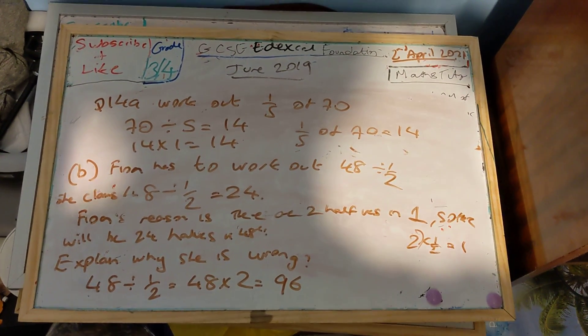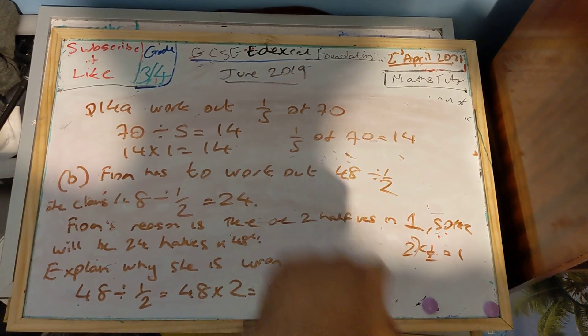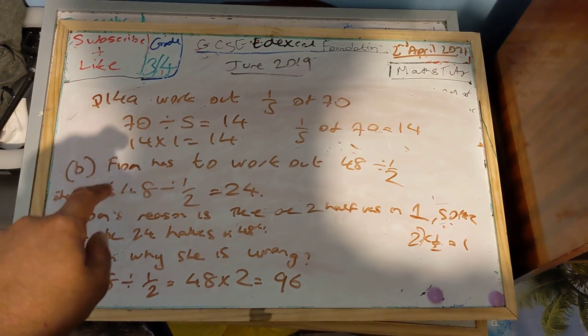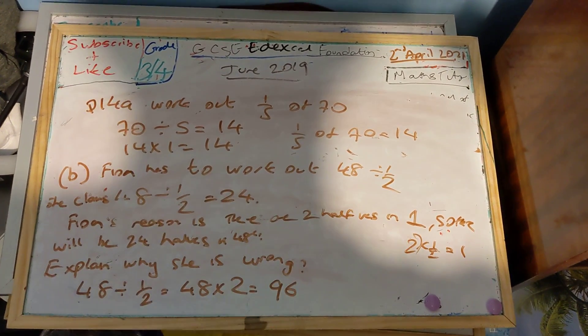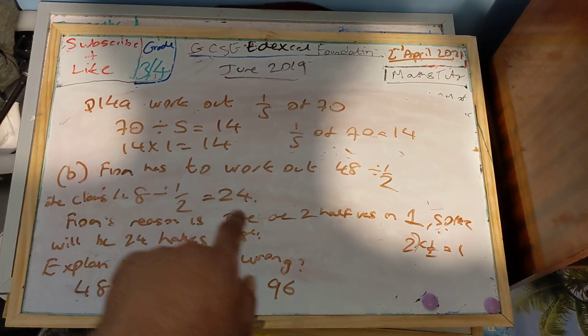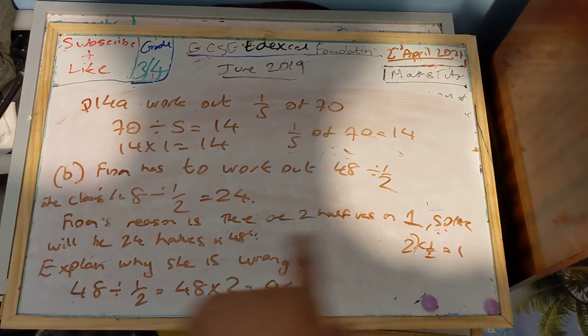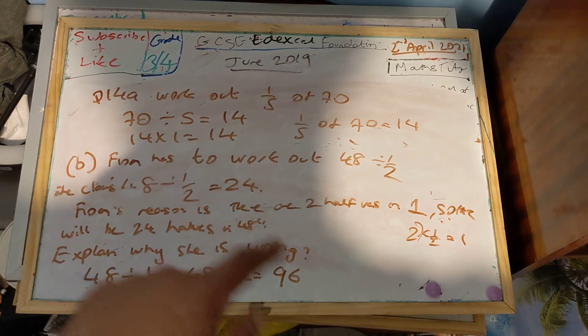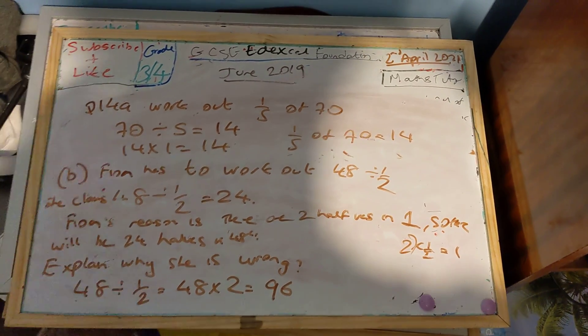Part B. It says Fiona has to work out 48 divided by half. She claims 48 divided by half is 24. Fiona's reason is there are two halves in one, so there'll be 24 halves in 48. Explain why she is wrong.